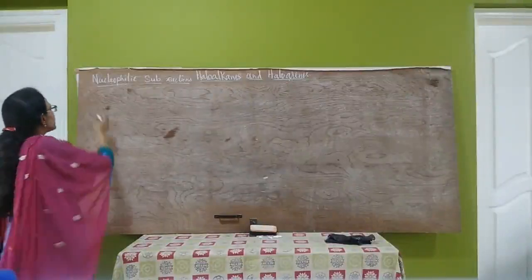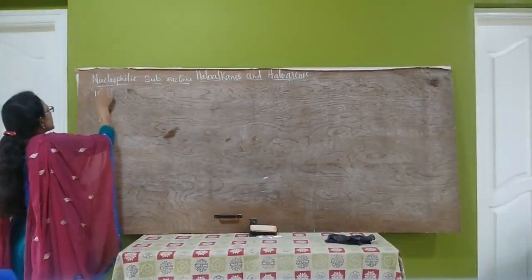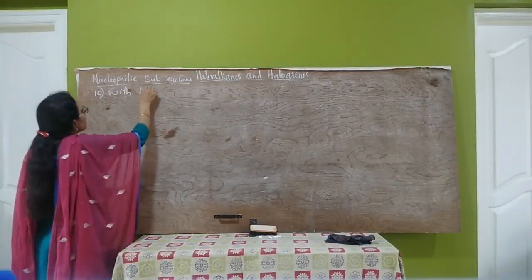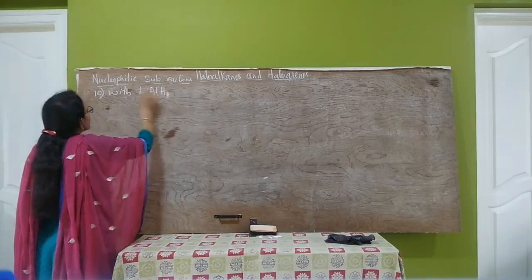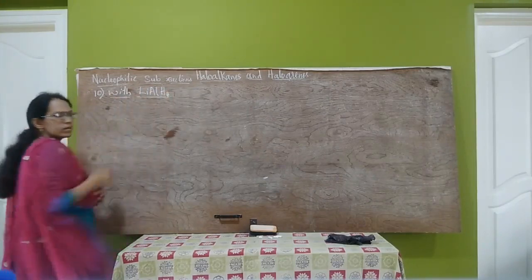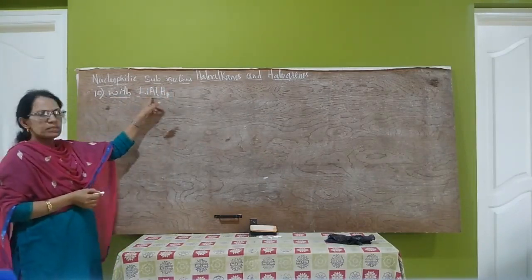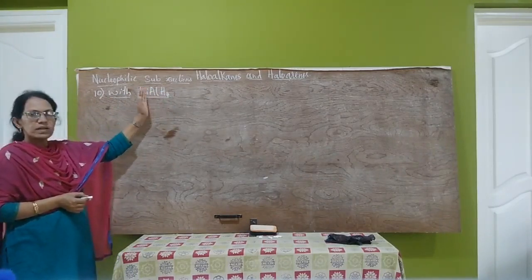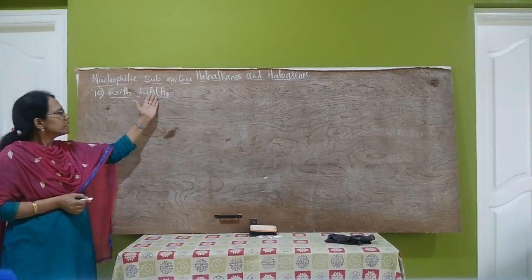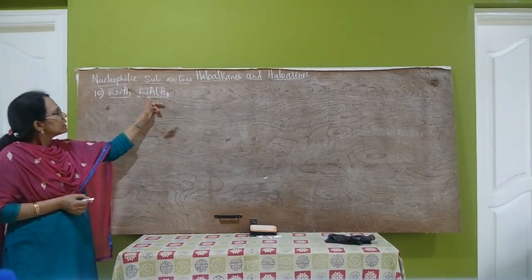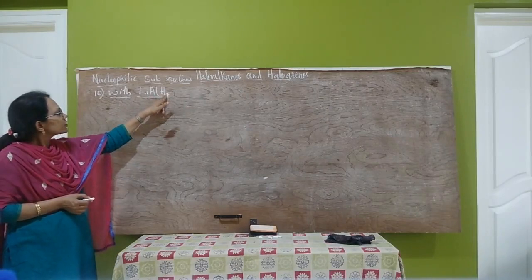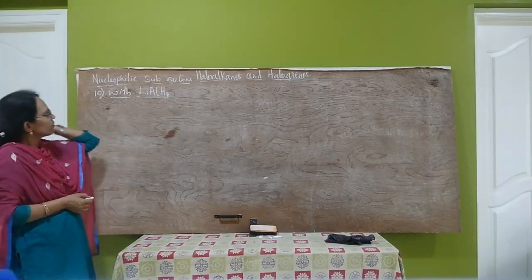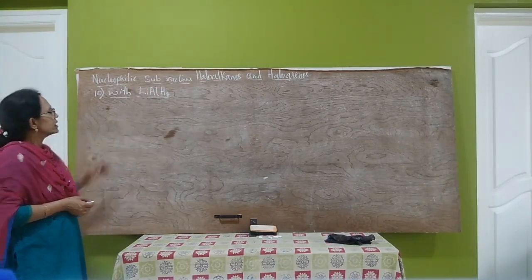The next nucleophilic substitution reaction, the 10th one, is with lithium aluminium hydride. Lithium aluminium hydride is a reducing agent — a very good reducing agent. Reduction means addition of hydrogen. This lithium aluminium hydride provides 4 hydride ions, H minus ions. Therefore, it acts as a very good reducing agent.